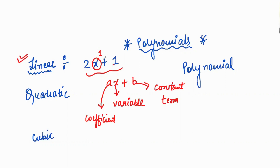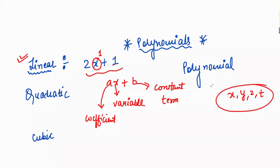Variables are always denoted by x, y, z, t, and so on. It can be x, y, or z — any variable. But this term — the coefficient — will always be a constant. So, in general form, a linear equation means the variable's power is 1.